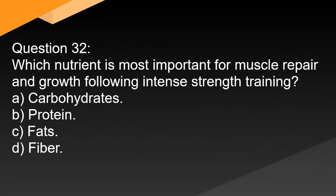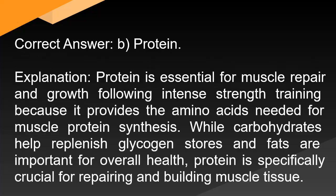Question 32: Which nutrient is most important for muscle repair and growth following intense strength training? A. Carbohydrates. B. Protein. C. Fats. D. Fiber. Correct answer: B. Protein. Protein is essential for muscle repair and growth following intense strength training because it provides the amino acids needed for muscle protein synthesis. While carbohydrates help replenish glycogen stores and fats are important for overall health, protein is specifically crucial for repairing and building muscle tissue.